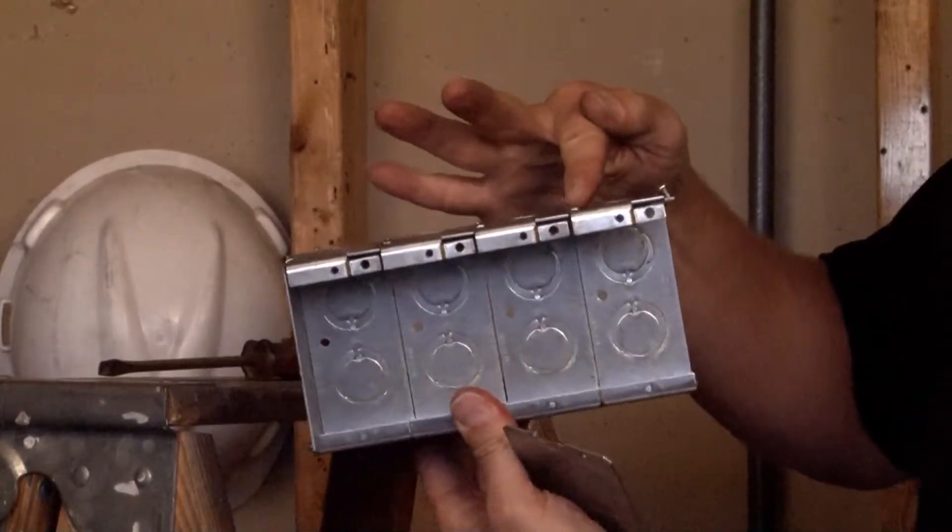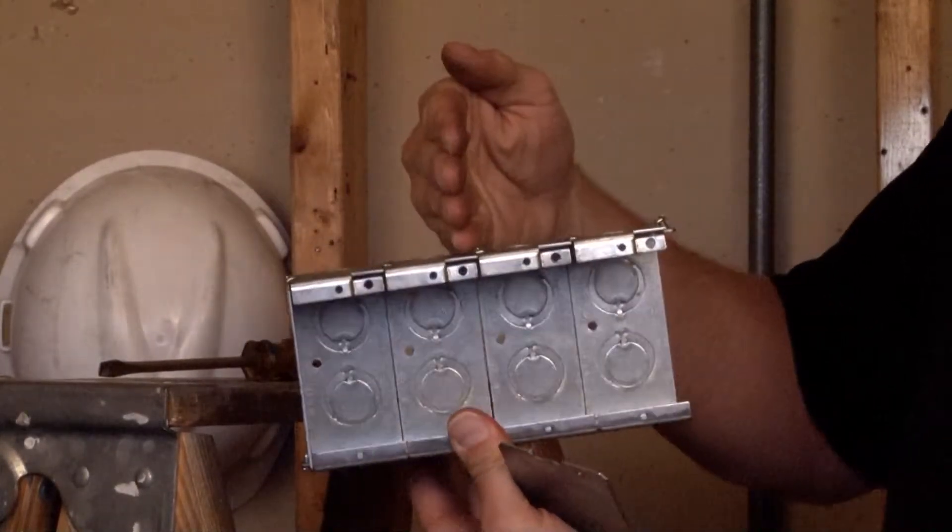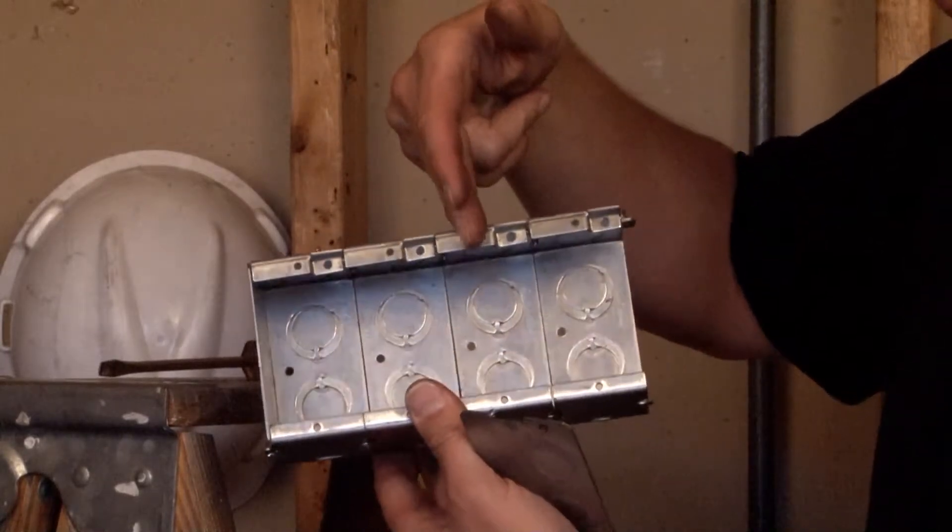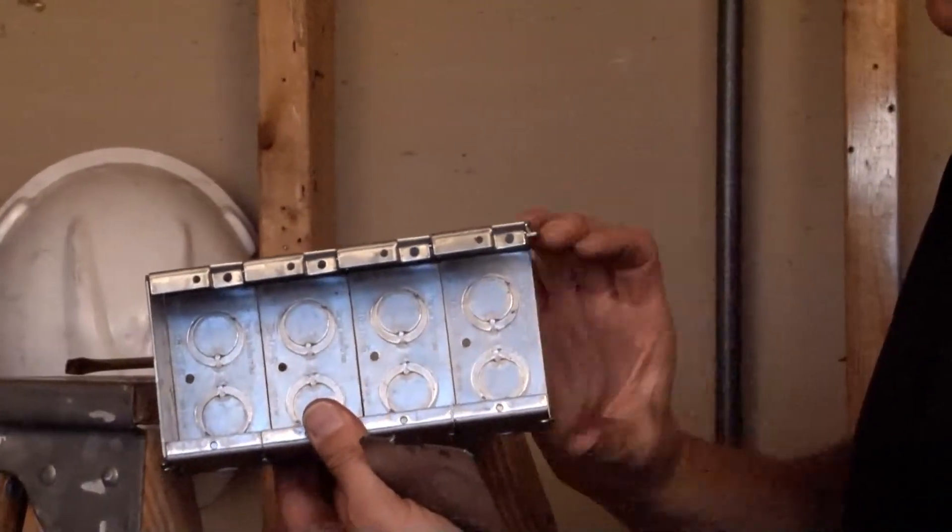You can continue to remove the screws and reduce the size if you only need two or three outlets, but if you need five or six, you can add them on.